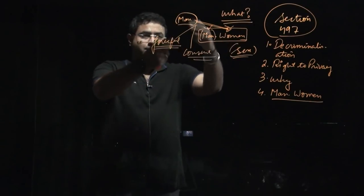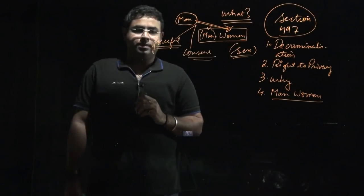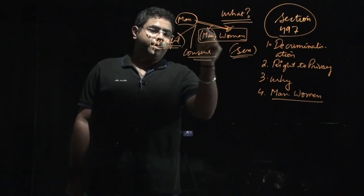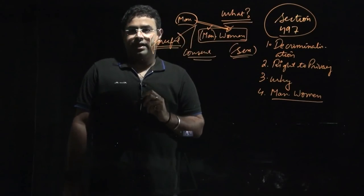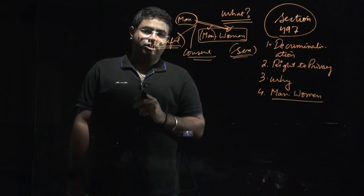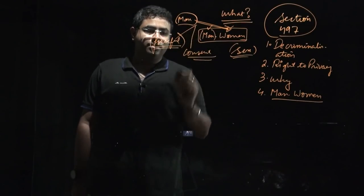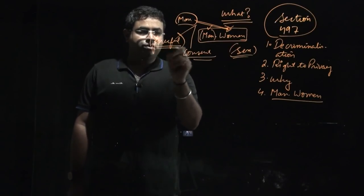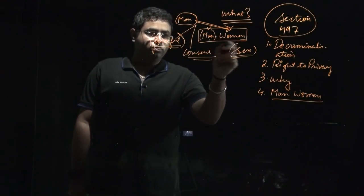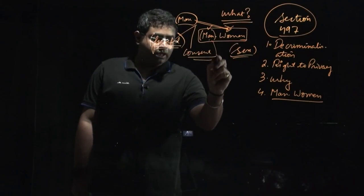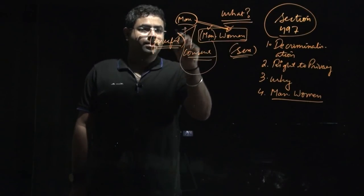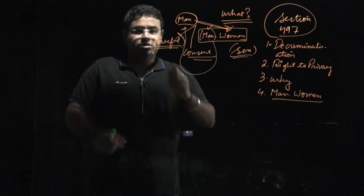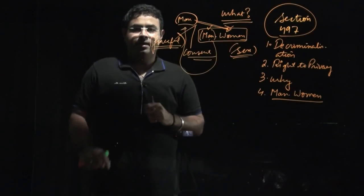Whether the sexual intercourse is with consent or forceful, the man who is married to the woman can lodge a complaint against this man on the grounds of adultery under Section 497. This is how adultery is defined in India.